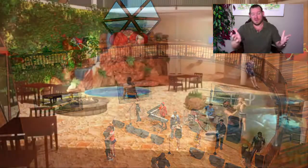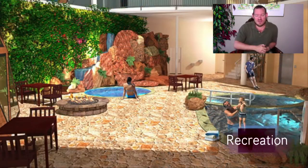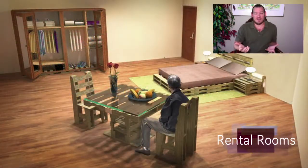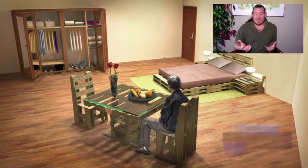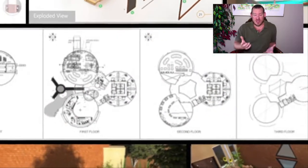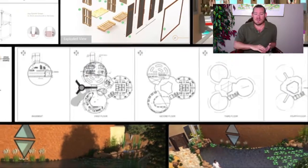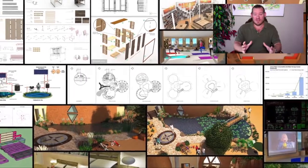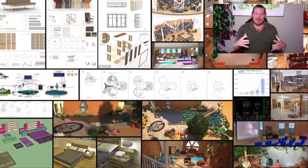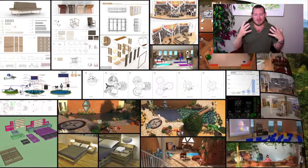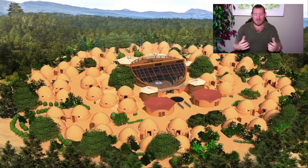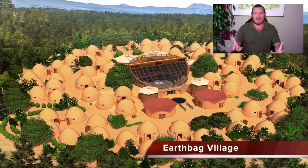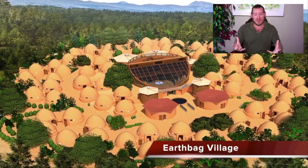Today's topic is strategic open source world creation — this is really what One Community is all about. We are strategically open sourcing all of the foundations of a sustainable civilization. By sustainable civilization, we mean going beyond just food, energy, and housing. What you see in the background is just part of the picture — there's a much bigger picture we call an evolution of sustainability.